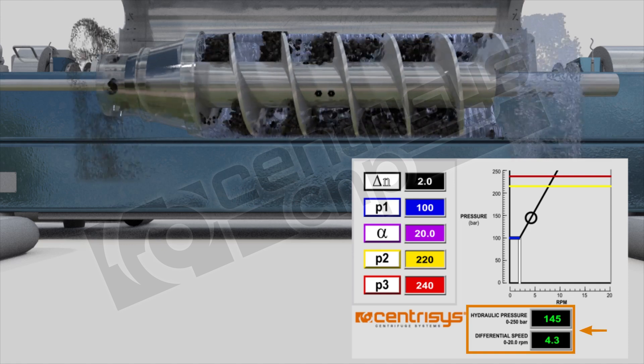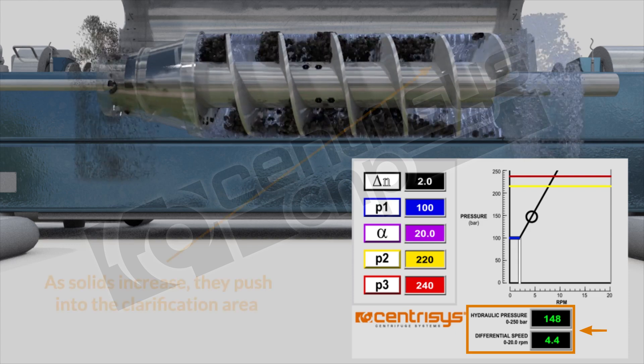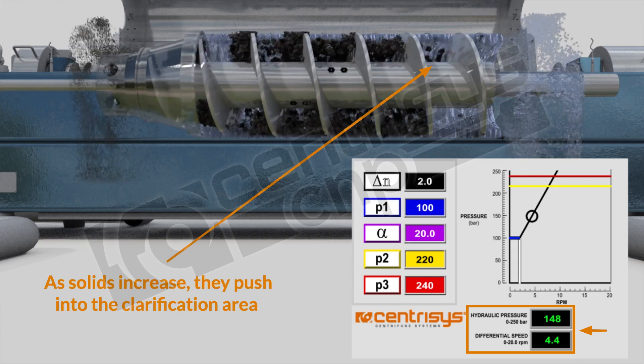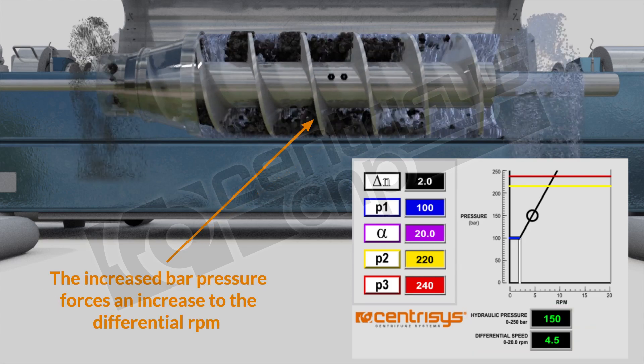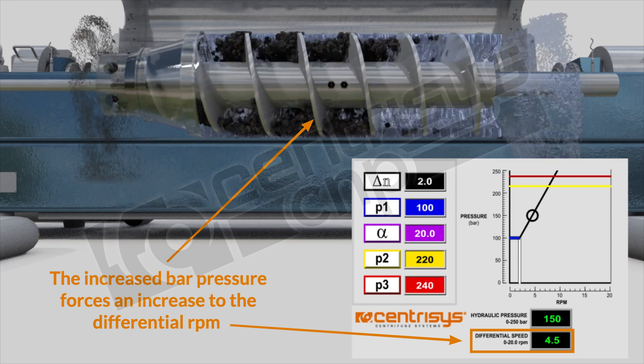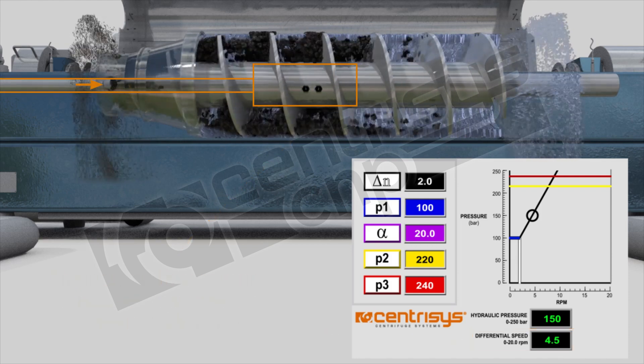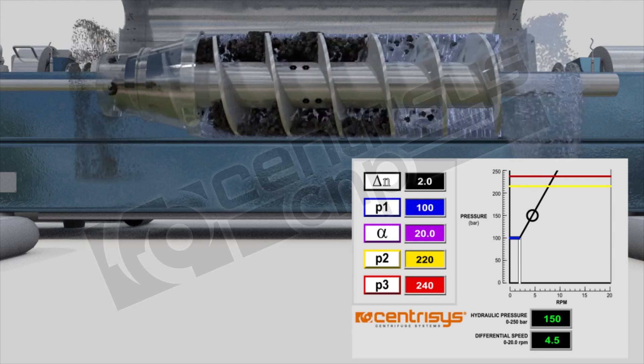Right now we're at 4.3 rpm and 147 bar. You see solids on top here carrying over into the liquid end and to prevent this it keeps speeding up, right now at 4.5 and 150 bar. It's found its equilibrium and the solids loading is kept constant on this machine.